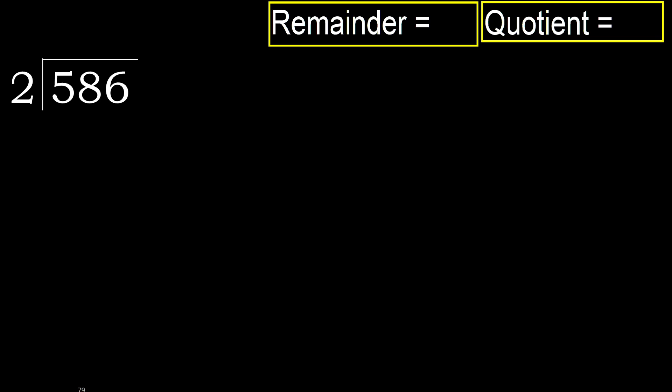586 divided by 2. 5 is not less, therefore with 5, 2 — multiply by which number is nearest 2, 5, but not greater.